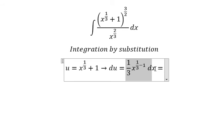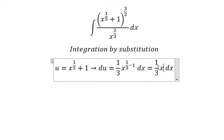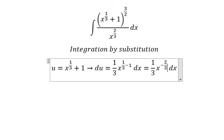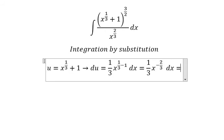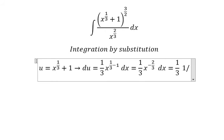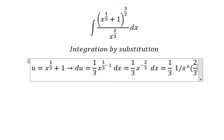And this one, that's x to the power of negative 2/3. And this is equal to 1/3 multiplied by 1 over x to the power of 2/3.